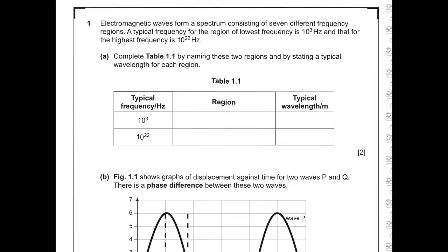Question 1. Electromagnetic waves form a spectrum consisting of seven different frequency regions. A typical frequency for the region of lowest frequency is 10 to the 3 Hz, and that for the highest frequency is 10 to the 22 Hz. Complete Table 1 by naming these two regions and stating a typical wavelength for each. The lowest region in frequency would be radio, and the highest would be gamma.